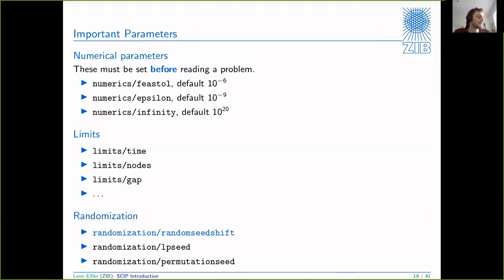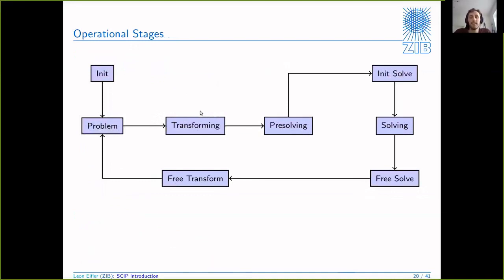The randomization parameters are also important. If you want to implement your own idea and test how well it performs in practice, you need to be aware that SCIP, like all other MIP solvers, has a lot of performance variability because there are many things going on. Changing the random seed shift might produce vastly different behaviors. So it's a good idea, if you have a specific kind of problem class, to run it several times with different random seeds to get a more reliable picture of how well your feature performs.